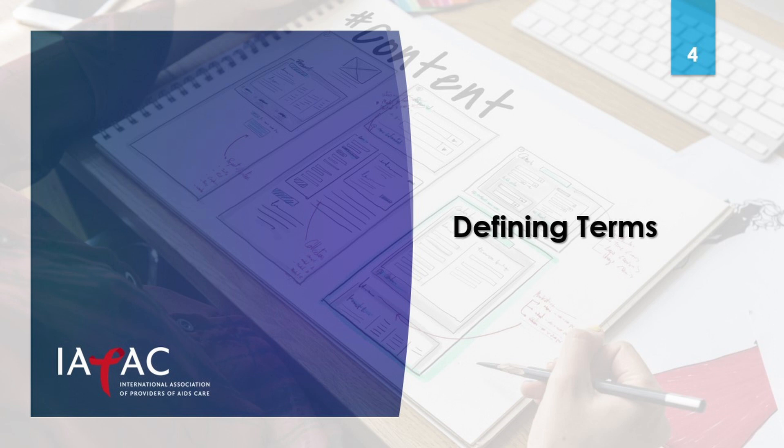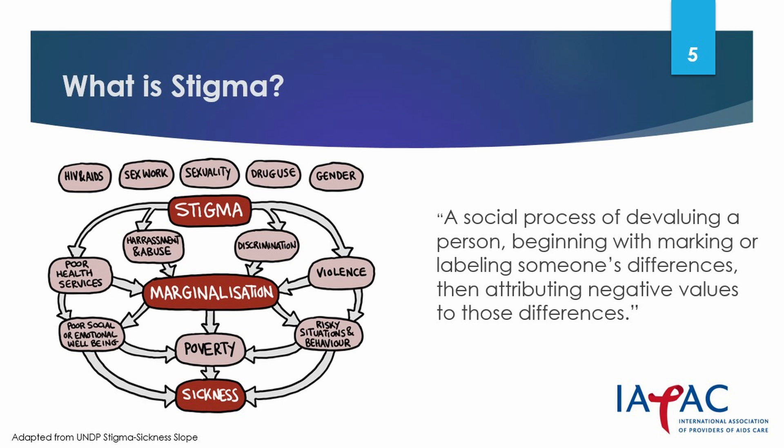Let's start with some simple definitions of stigma and discrimination. Stigma is defined as a social process of devaluing a person, beginning with marking or labelling someone's differences, and attributing negative values to those differences. People who are stigmatized because they are living with HIV, because they engage in sex work or drug use, or express different gender norms, fall victim to marginalization, becoming the subjects of harassment, abuse, discrimination, and violence.